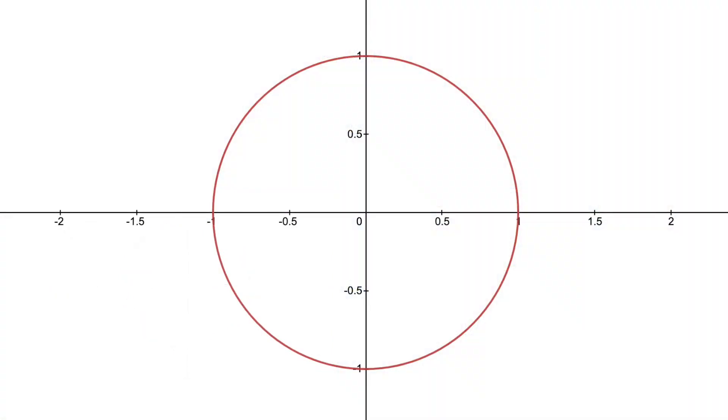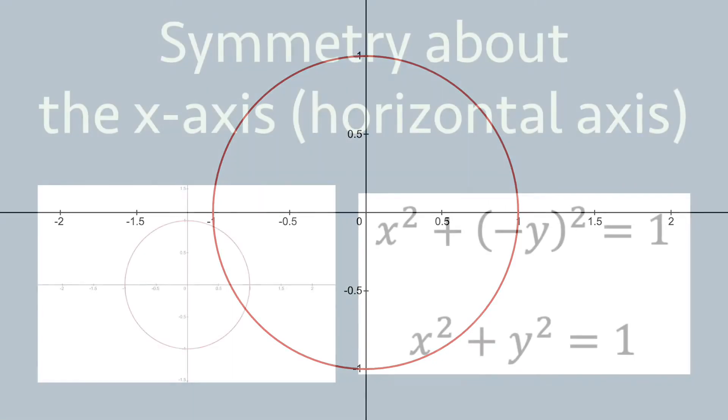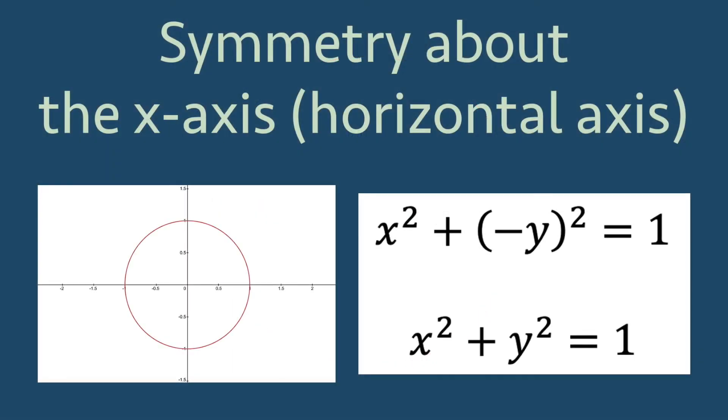For example, the circle x squared plus y squared equal 1 is symmetric about the x-axis just upon visual inspection. But also, when we replace y with negative y, we get the same equation. x squared plus parentheses negative y squared equal 1 just becomes x squared plus y squared equal 1.